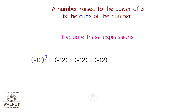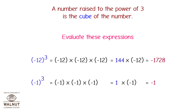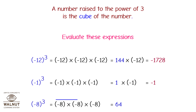Minus 12 cube is equal to minus 12 into minus 12 into minus 12. So first, minus 12 into minus 12 is equal to 144, and 144 into minus 12 is equal to minus 1728. Hence, minus 12 cube is equal to minus 1728. Minus 1 cube is equal to minus 1 into minus 1 into minus 1. So first, minus 1 into minus 1 is equal to plus 1, and plus 1 into minus 1 is equal to minus 1. Therefore, minus 1 cube is equal to minus 1. Minus 8 cube is equal to minus 8 into minus 8 into minus 8. So first, minus 8 into minus 8 is equal to plus 64, and plus 64 into minus 8 is equal to minus 512. Therefore, minus 8 cube is equal to minus 512.